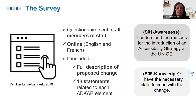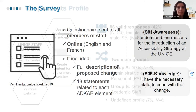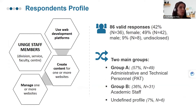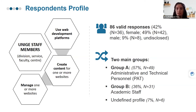Statements could be, for instance, one related to awareness: 'I understand the reasons for the introduction of an accessibility strategy at my institution,' or one related to knowledge: 'I have the necessary skills to cope with the change.' We particularly targeted people who would use web development platforms, create content for websites, or manage websites. We received 86 valid responses, quite balanced in terms of gender. We identified two main groups: PAT — administrative and technical personnel including web designers, web masters, and platform administrators — and academic staff members, from assistants to full professors.